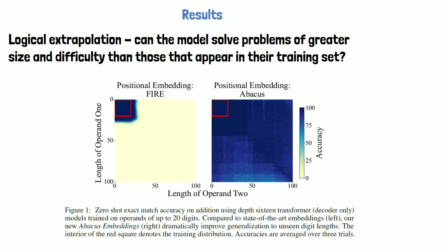The results show accuracy for adding two numbers, where the number of digits each operand has is represented by the x and y axes, and accuracy is reported with color for each combination of digit counts — dark color means high accuracy and bright color means low accuracy. The red square of size 20 by 20 shows the digit counts the models were trained on, and we can see a dramatic improvement for unseen number lengths when using abacus embeddings, achieving almost perfect accuracy for numbers up to 100 digits while being trained on numbers up to 20 digits.